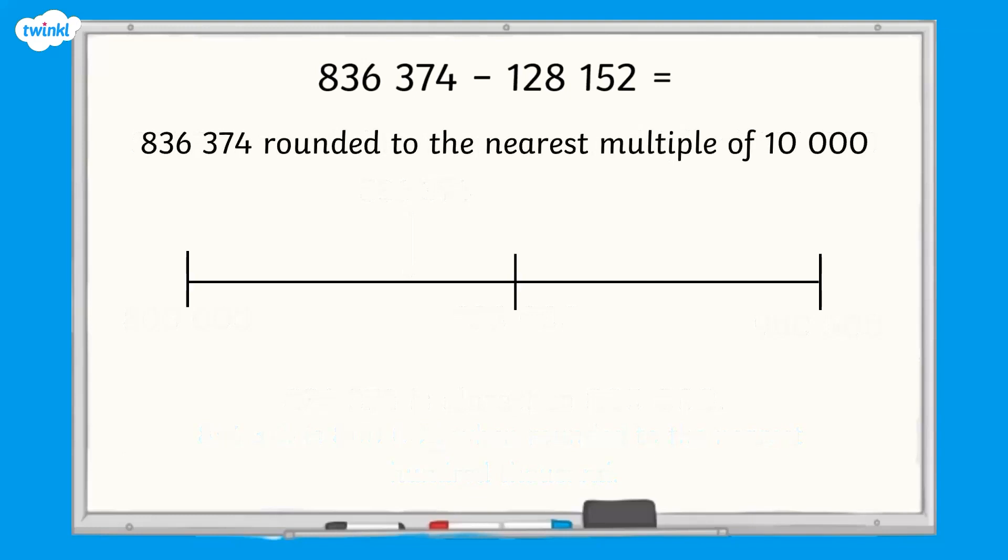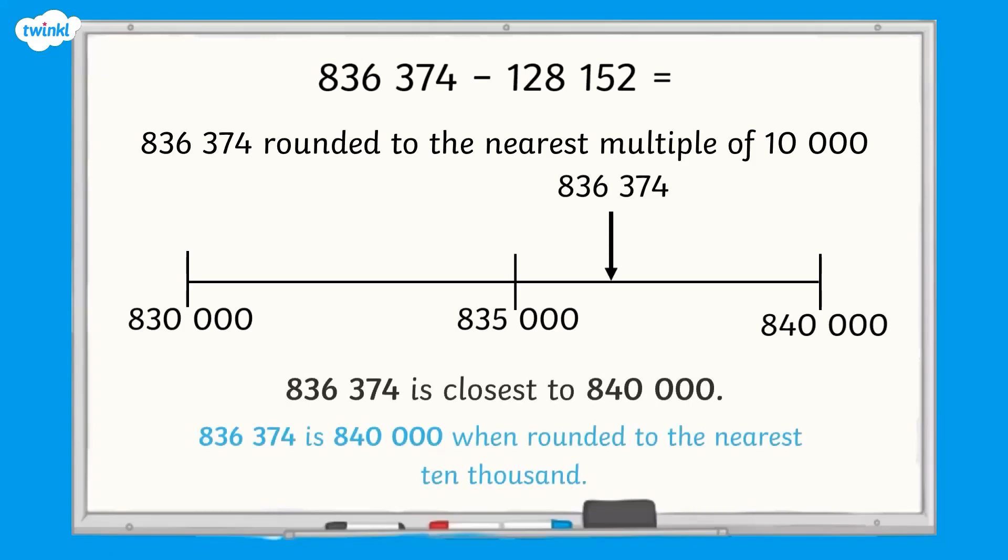We can repeat this process for rounding 836,374 to the nearest multiple of 10,000, and see that it is 840,000.